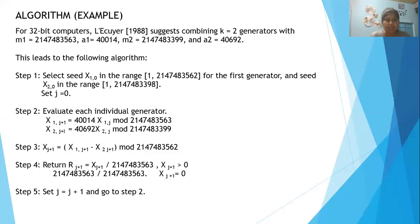and X_2,j+1 for the second generator. The value for the first one is a_i times X_1,j mod m_i. The solution is 40014 times X_1,j mod 2147483563.